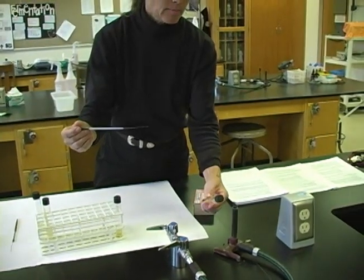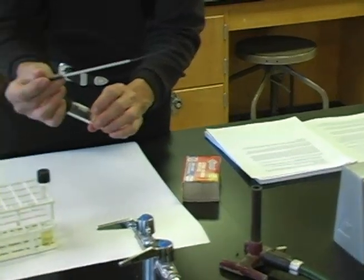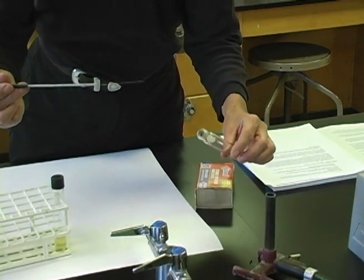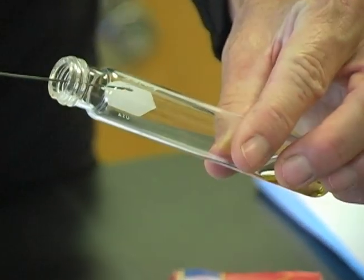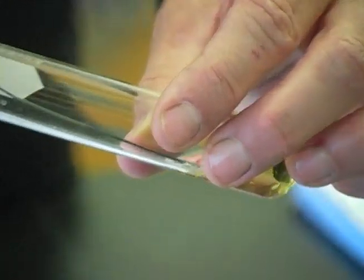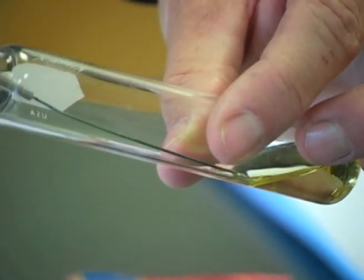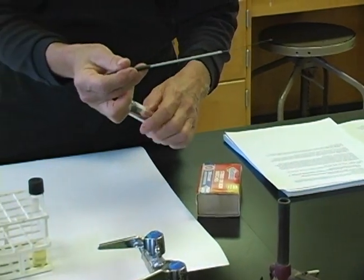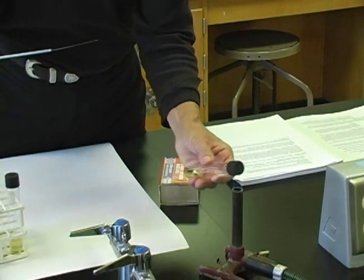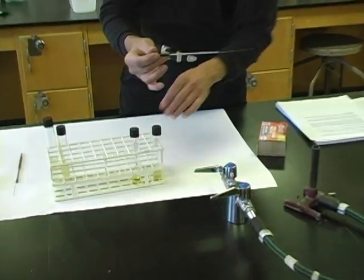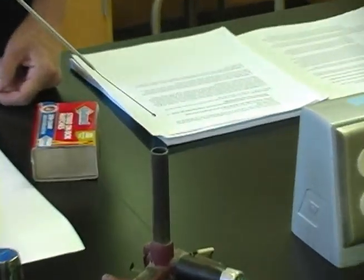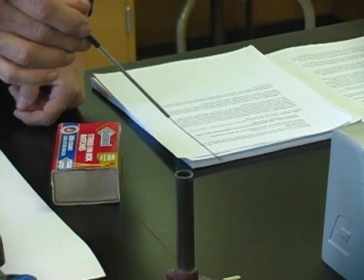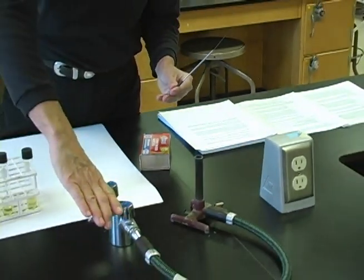I then will flame the cap of my fresh tube of broth three times. Hold in a near-horizontal position. Flame the lips three times. And now I will insert my loop without touching the outside of the tube. I'll immerse my loop with the microbes it contains in the fresh broth. Withdraw my loop. Flame the lips three times. Replace the cap. Flame the cap three times. And very importantly, I need to flame my loop to kill any of the microbes that still remain. And once again, we'll lightly flame the handle. And turn off the Bunsen burner when you're finished.